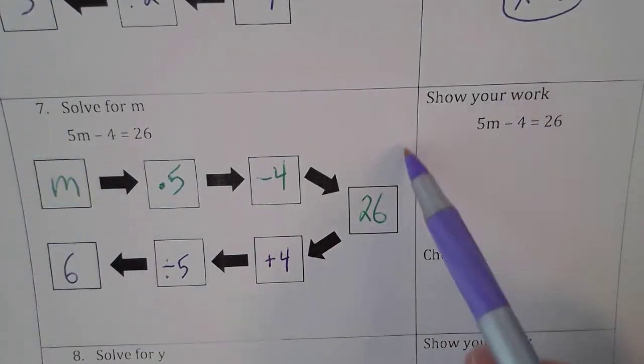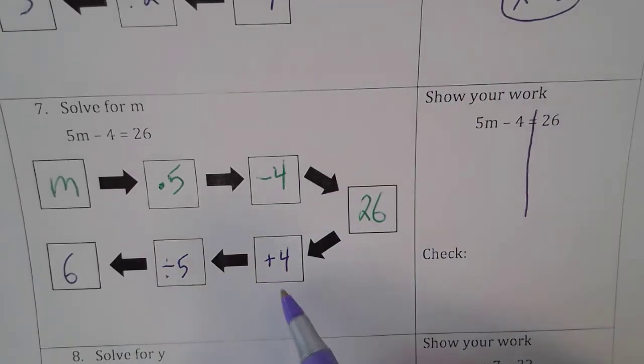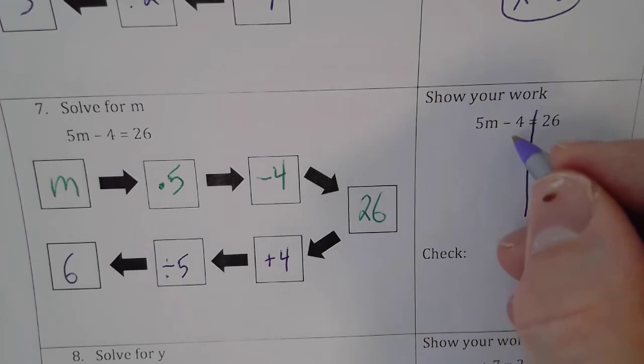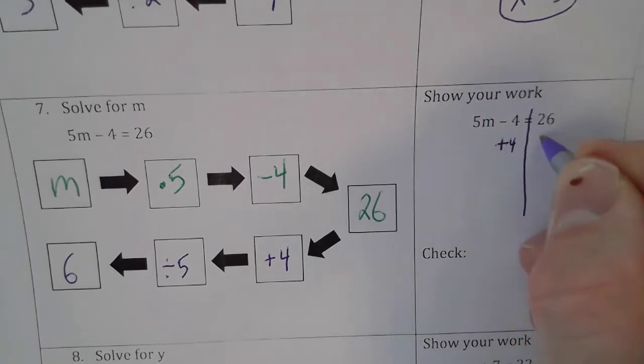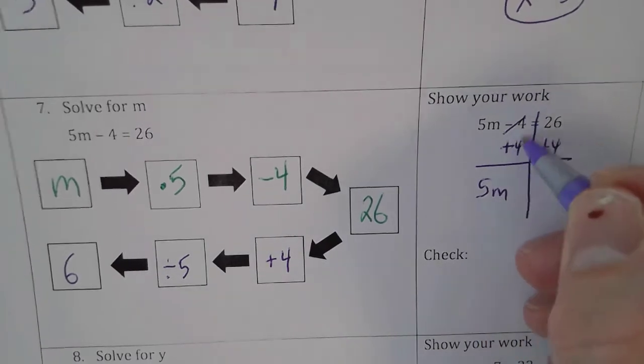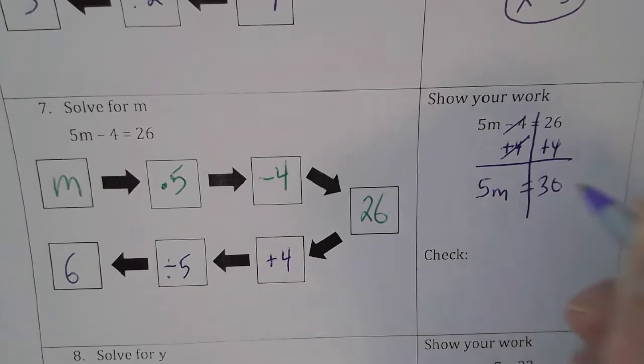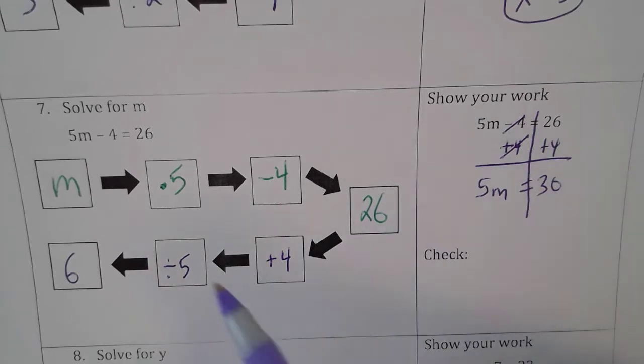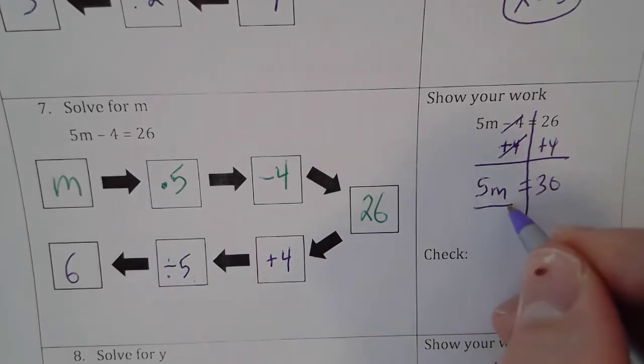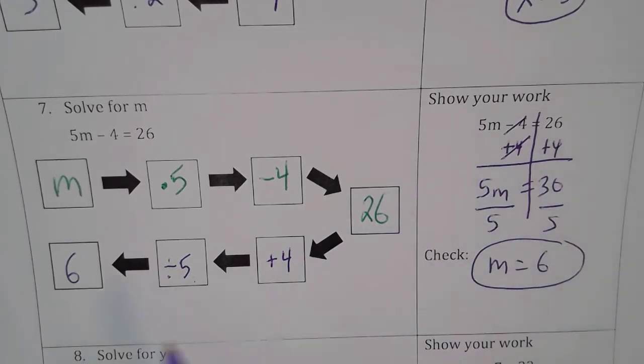What we can do is just use what we know about the steps to solve over here. Step one would be to add 4, because you want to undo what's being done. You end up with 5m, because the minus 4 and plus 4 cancel out on the left side. And the 26, you're going to add 4 to it, you're going to get 30. It's a balancing act, whatever you do to one side, you do to the other. Last step, to undo that multiplication, we're going to divide. So you divide by 5 on both sides, and you get m equals 6, which is what we got here.